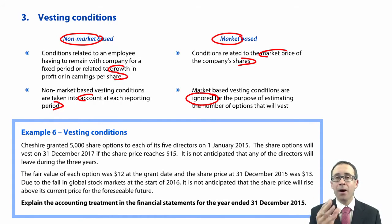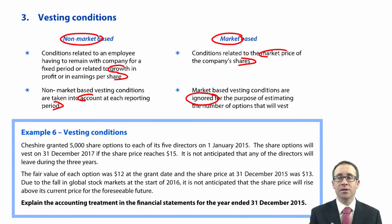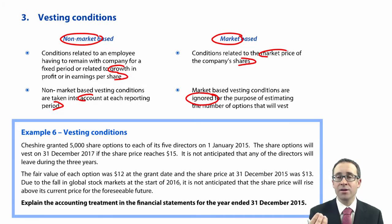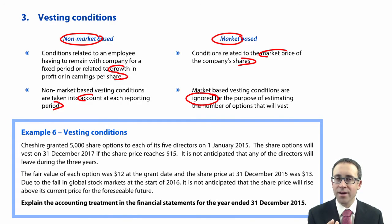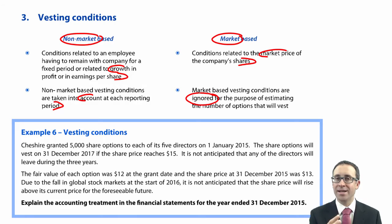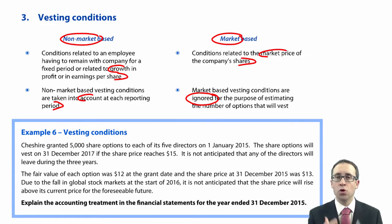The reason is that the market-based vesting condition is actually factored into the fair value of the share-based payment, so it has already been accounted for. If there is a high likelihood of meeting the target, that will give rise to a higher fair value than if the likelihood is slim. You don't need to worry about the theory behind that. All you need to identify is that if there is a market-based vesting condition, we ignore that condition until the options actually vest. If it hasn't met the target share price or grown by the required percentage, the options do not vest and we reverse everything out that we've done over the previous three years.